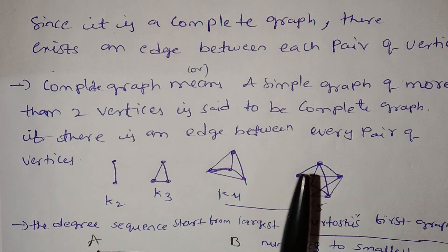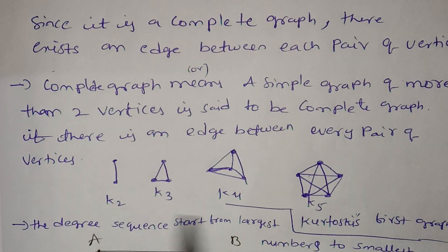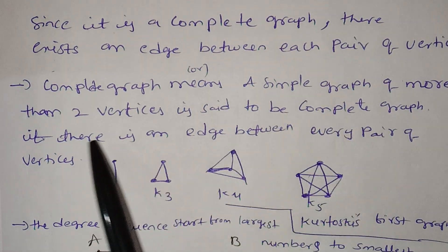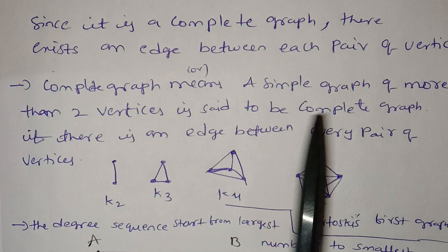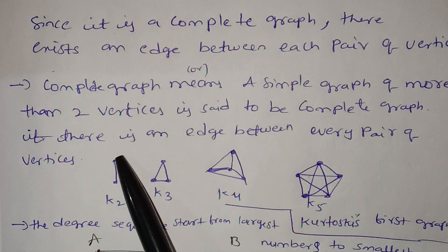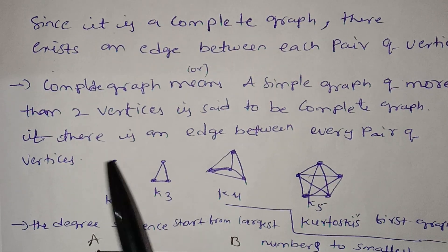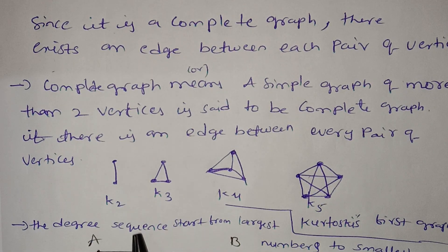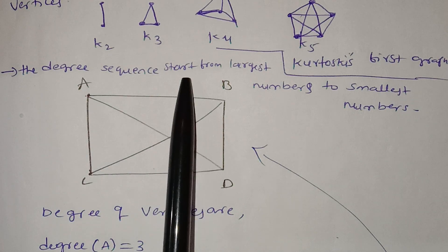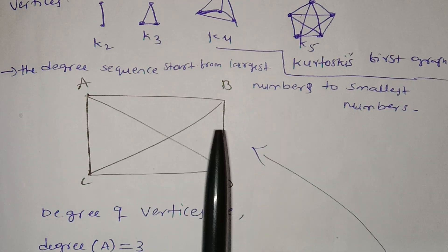This is a complete graph — every vertex is connected to every other vertex. In the exam, you can see there exists an edge between each pair of vertices.